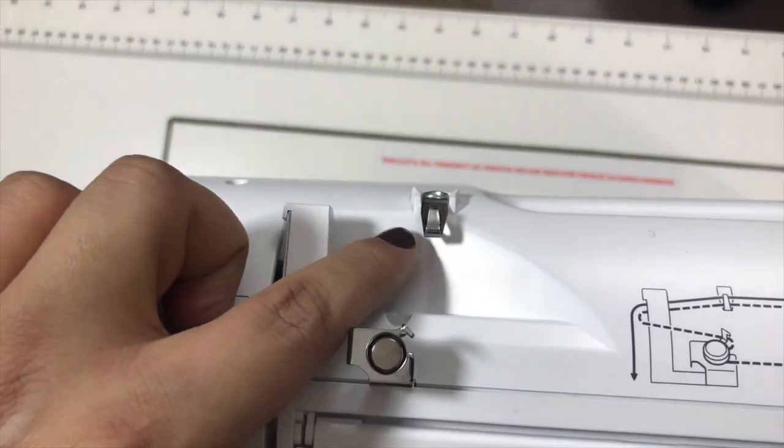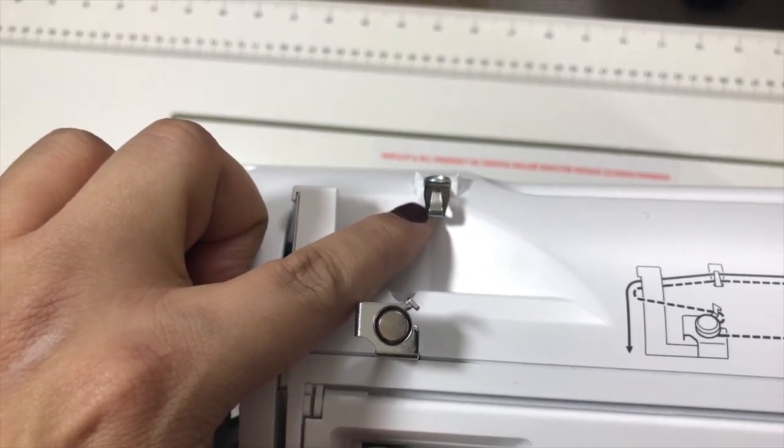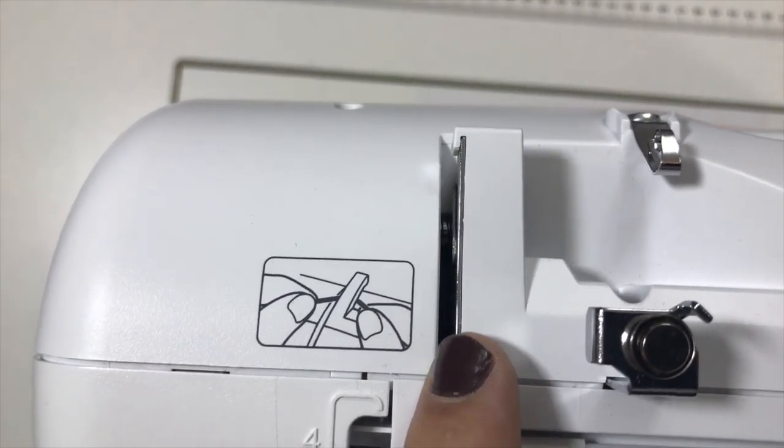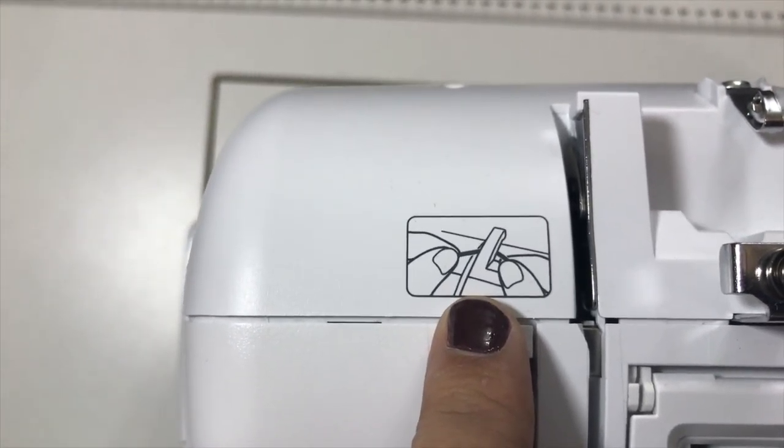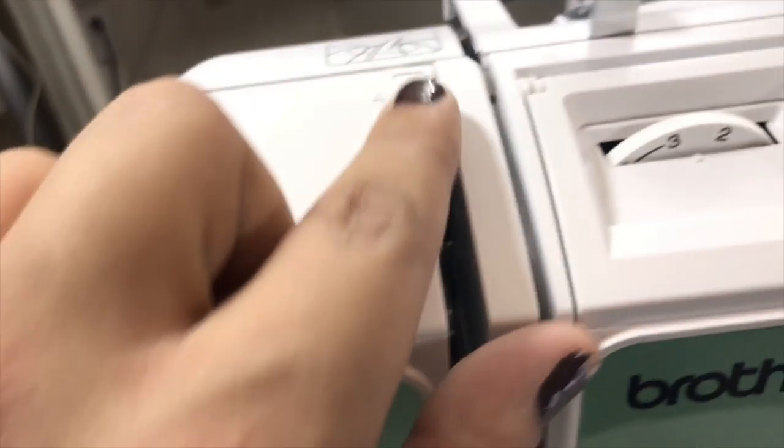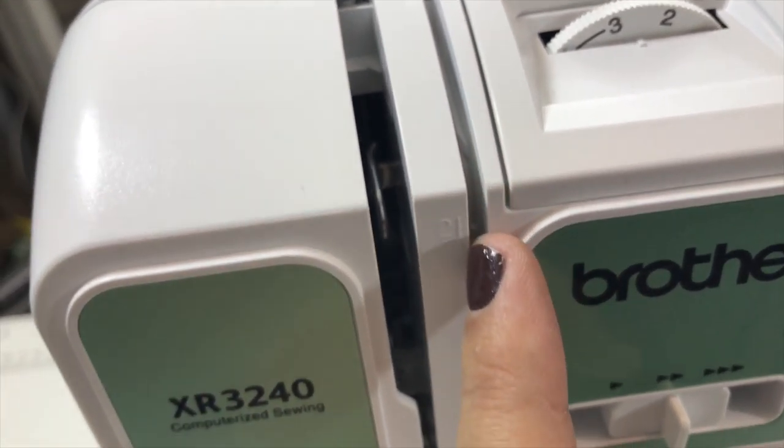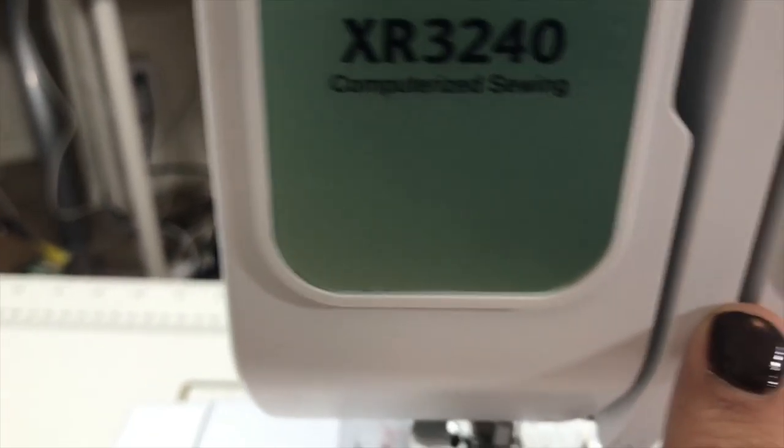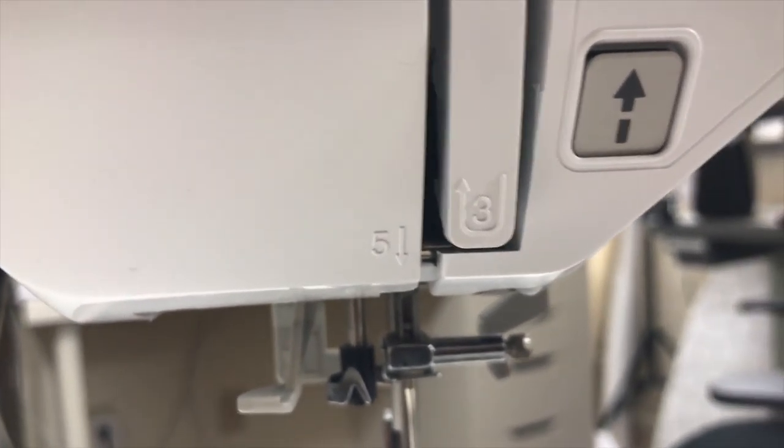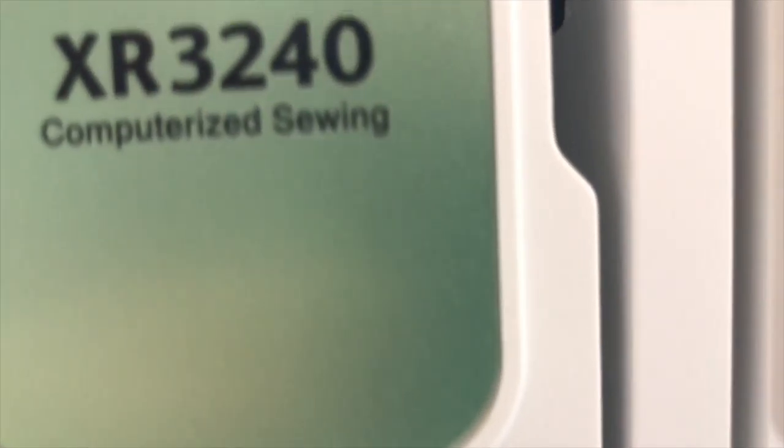So the first thing is pass the thread over here. So we're going to do that. But then you do have this area here that you need to pass the thread up in here. As you can see here, it's showing you how to do it. Then we're going to pass the thread all the way through here, which is step number two. Then we're going to pass all the way through here, which is number three.